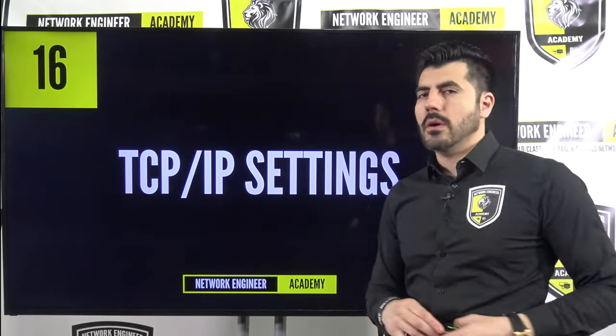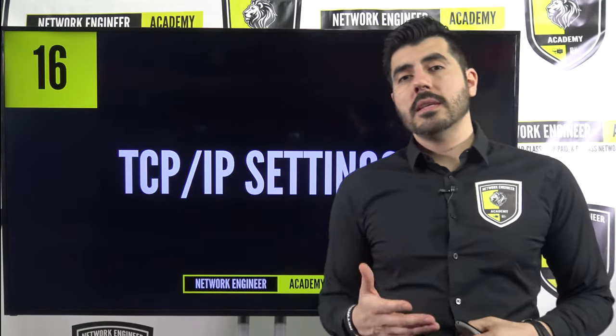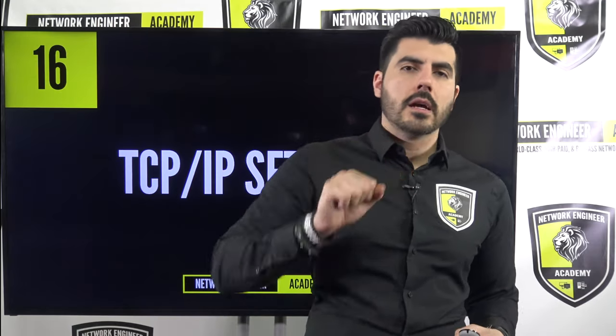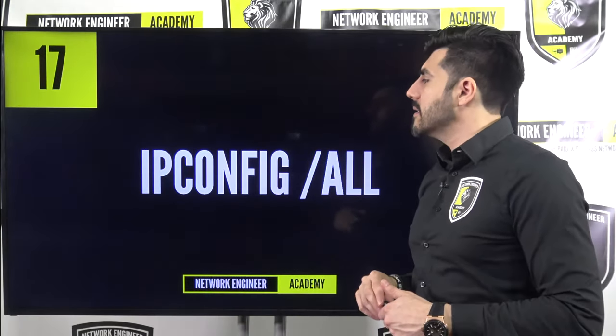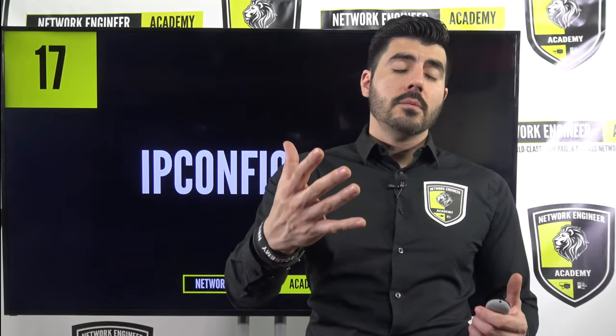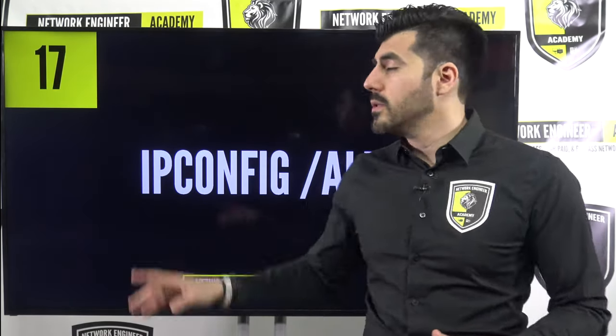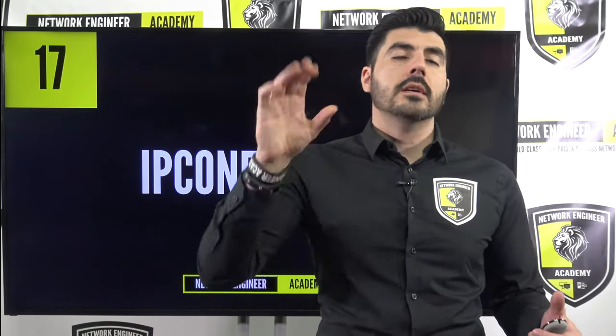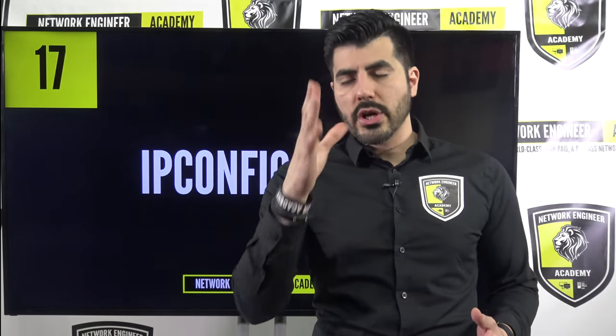Number sixteen: TCP/IP settings. You can go into the properties of the network port on your computer and find the MAC address of that port in the TCP/IP settings. You can also see the IP address, subnet mask, default gateway, IPv6 address, and DNS. If you type 'ipconfig /all' on a Windows computer in the command prompt, you'll be able to find the MAC address as well.